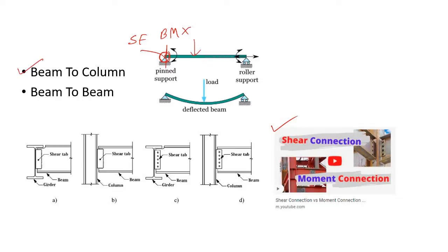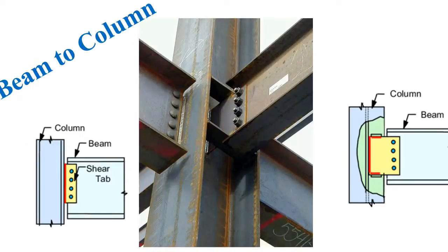There are two types of shear connection: the first is beam-to-column and the second is beam-to-beam. Now let's discuss each of them. First is the beam-to-column connection — here you can see the column and the beam, and we need to make sure this connection is a pin connection, meaning there is no bending moment.